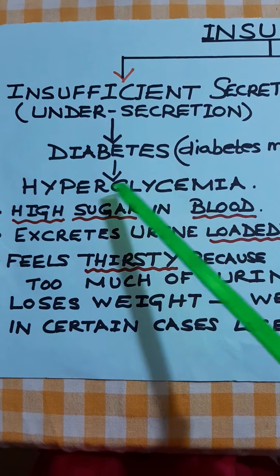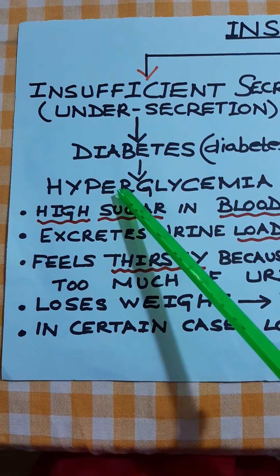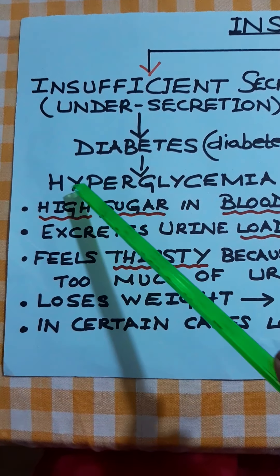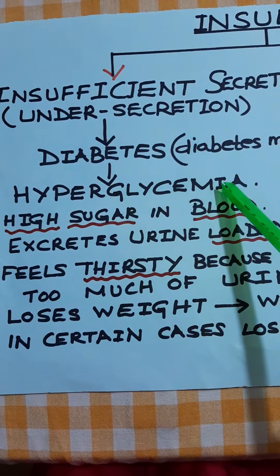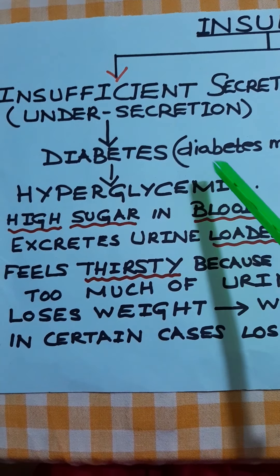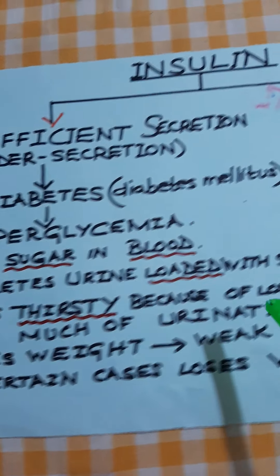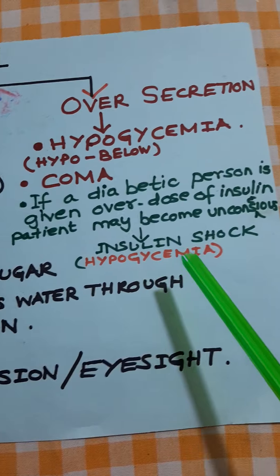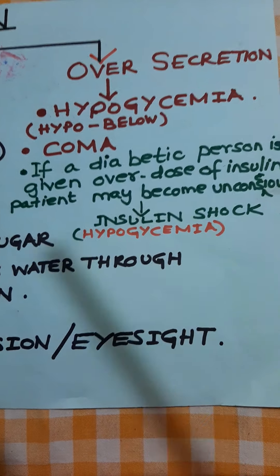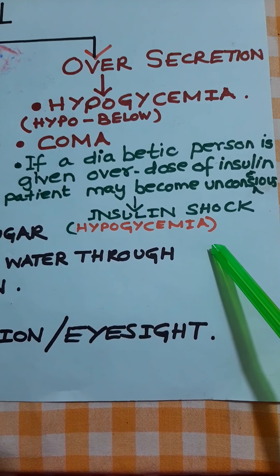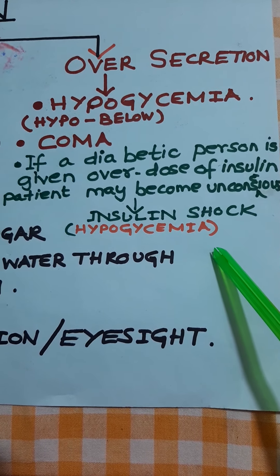Diabetes is also called hyperglycemia — the prefix 'hyper' means too much, and 'glycemia' refers to sugar in the blood, so hyperglycemia means too much sugar in the blood. Now moving to over-secretion of insulin.